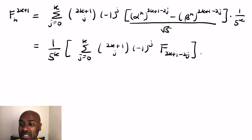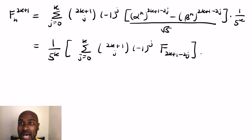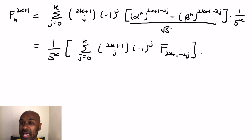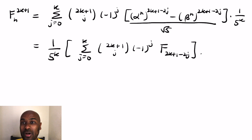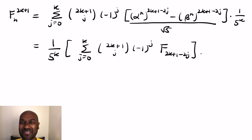In the comments, I'd like you to try this with even powers. What kind of summation do you get in that case? How can you represent an even power of a Fibonacci number in terms of Fibonacci numbers? Love to hear your thoughts, and we'll see you in the next video.